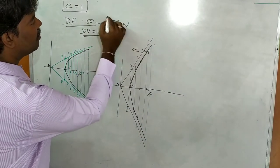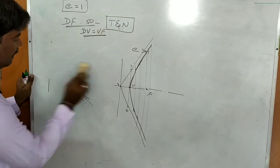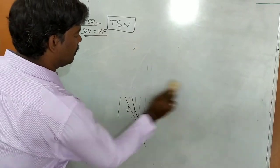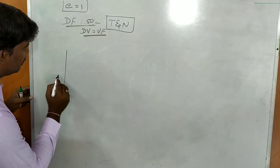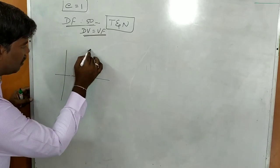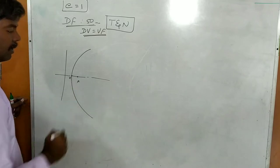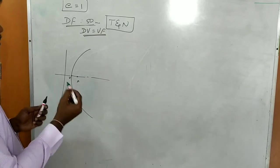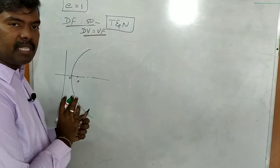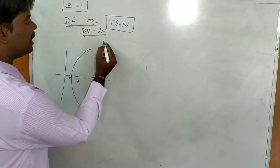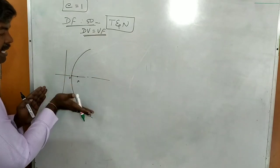So today's topic is how to draw tangent and normal for both parabola and hyperbola. The same procedure used for ellipse in the last video applies here — 100% the same. There are three cases: one is for a point anywhere on the curve, next is for a point at a given distance from the directrix on the curve, and the third is for a given distance from the axis on the curve.